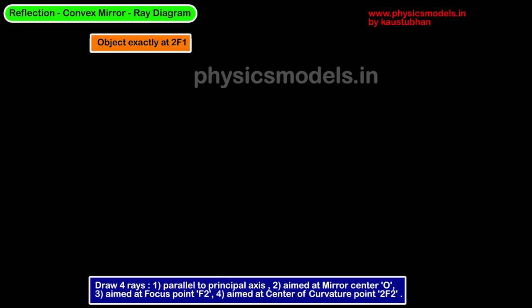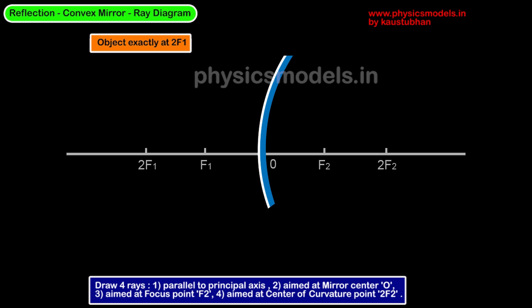There are three things we'll talk about in an image. Is it real or imaginary? If the dotted lines are meeting, then it's an imaginary or virtual image. Is it erect or inverted? And is it small or larger?